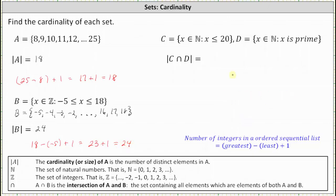For the last example, we're asked to determine the cardinality of the intersection of C and D. Let's write set C and D as lists. So set C is the set of all natural numbers x such that x is less than or equal to 20, and therefore C contains the elements 0, 1, 2, 3, all the way out to 20.